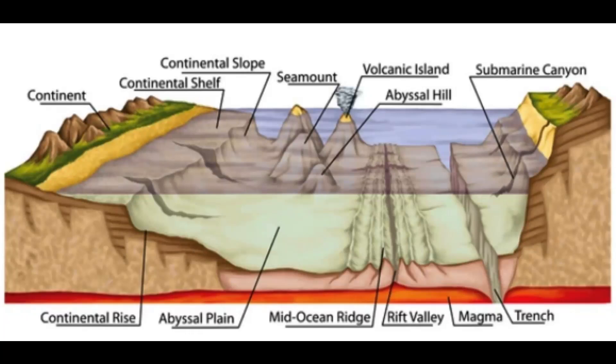Ocean basins are large depressions on Earth's surface that are primarily filled with seawater. They make up the majority of the Earth's surface and are characterized by their immense size, deep depths, and unique geological features. The ocean basins are divided into five main basins: the Atlantic Ocean Basin, the Pacific Ocean Basin, the Indian Ocean Basin, the Southern Ocean Basin, and the Arctic Ocean Basin.